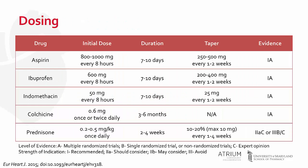This table highlights the dosing information for our first- and second-line agents. Aspirin and NSAIDs are given every eight hours for seven to ten days until resolution of symptoms, then tapered every one to two weeks over one month. Colchicine is given at a dose of 0.6 mg twice daily. In studies, patients who weighed less than 70 kg or exhibited colchicine's dose-limiting side effect, diarrhea, were given once-daily dosing.